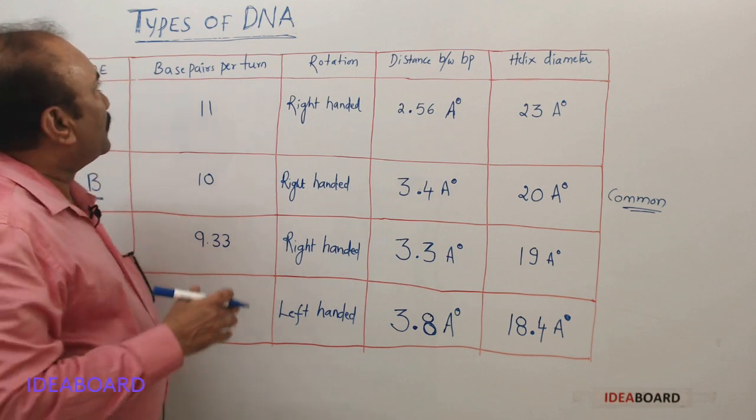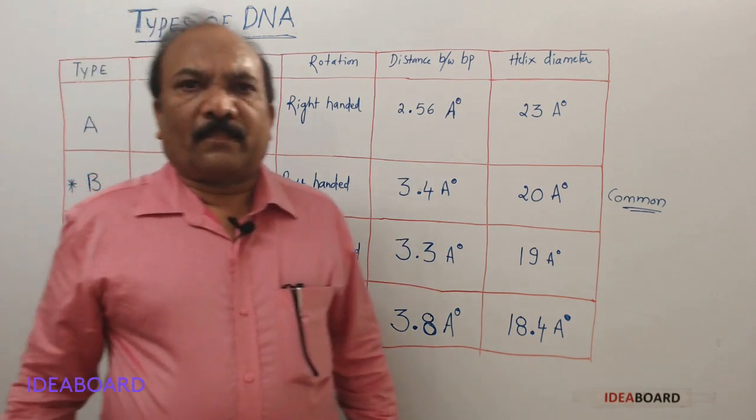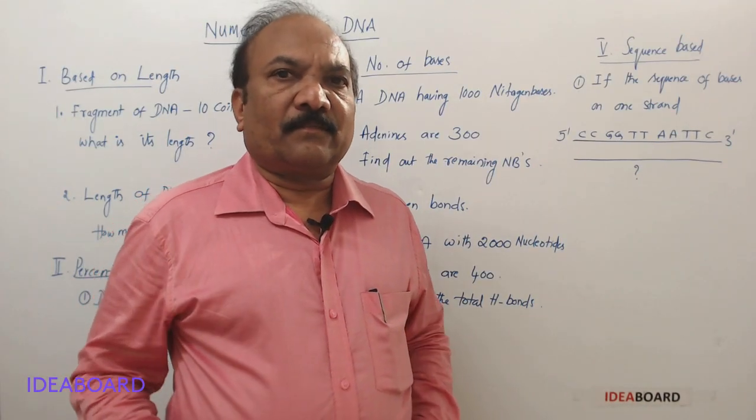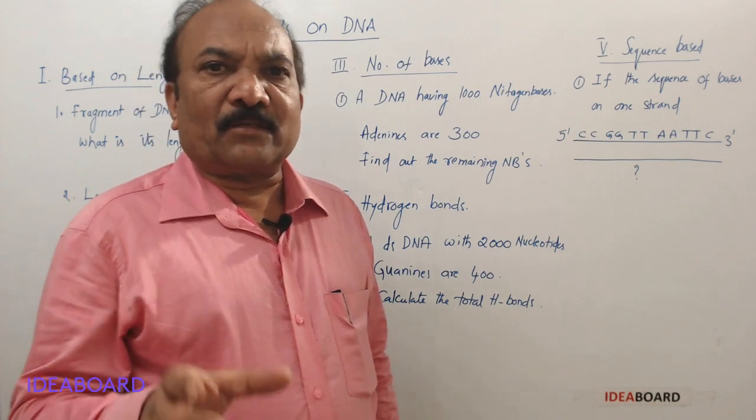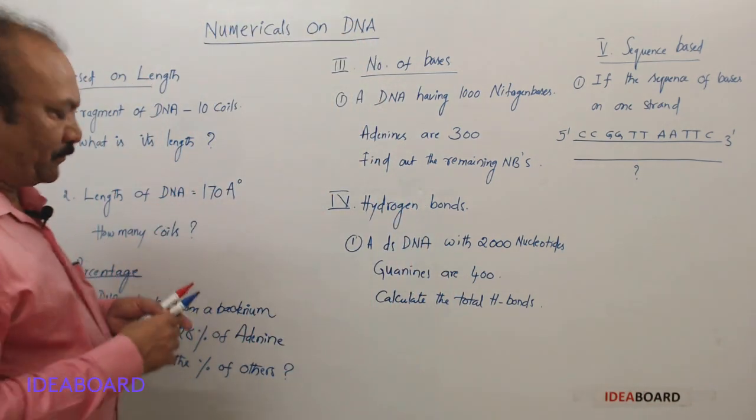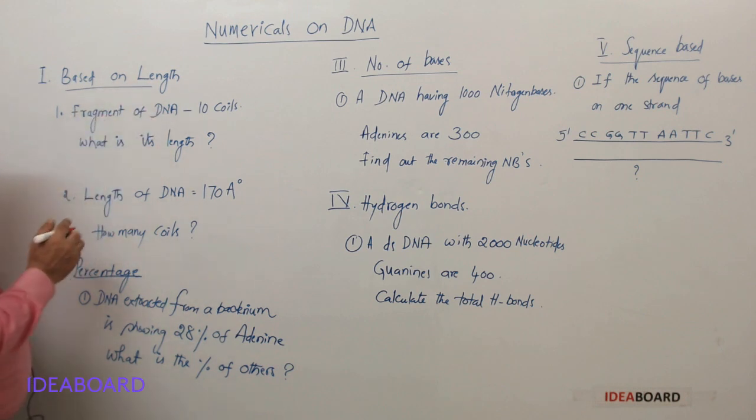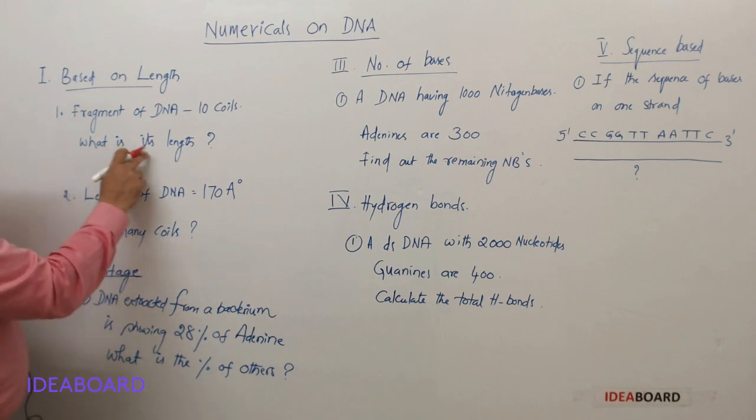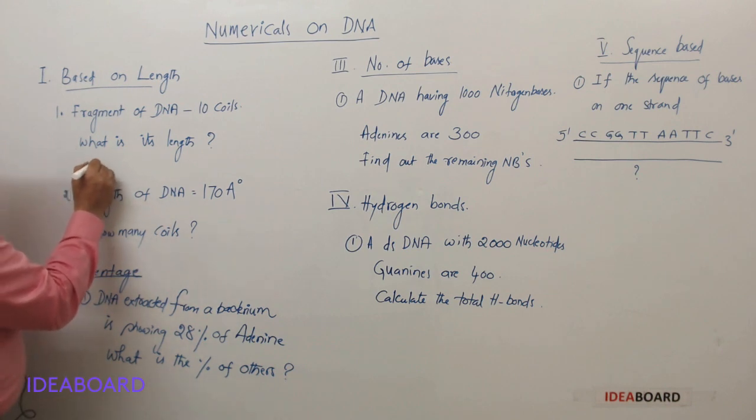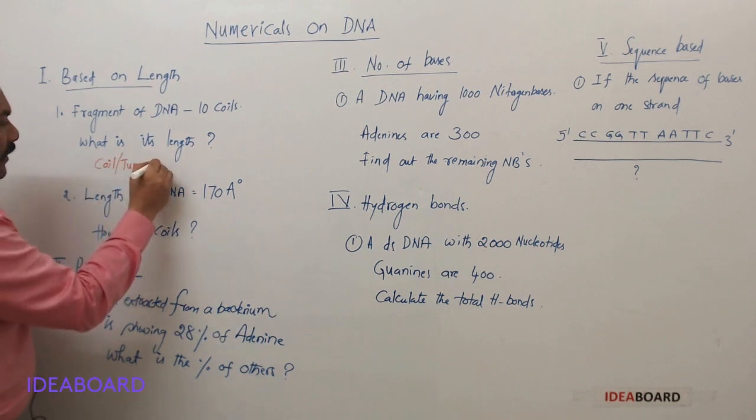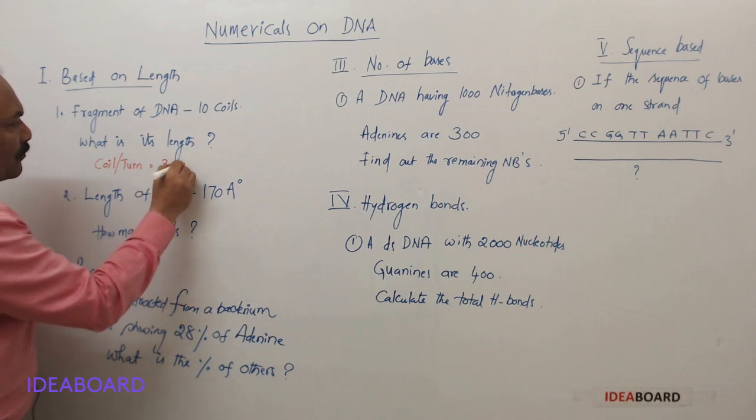These are the different types of DNA, students. Let us solve some problems based on DNA—now numericals on DNA. Some problems will be based on length. I am reading out this problem: a fragment of DNA is showing 10 coils, what is its length? Very simple problem. We know that a coil or a turn measures—the length of one coil is 34 angstrom units, right?